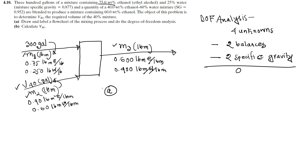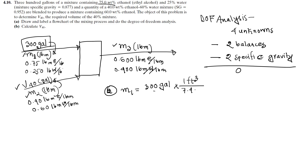Now for part (a): calculate M1. The feed is 300 gallons volumetric flow rate. We need to convert from gallons to pound mass. The conversion uses specific gravity: 300 gallons divided by 7.48 gallons per cubic foot, times the specific gravity of 0.870, to get the mass flow rate of 195 pounds.